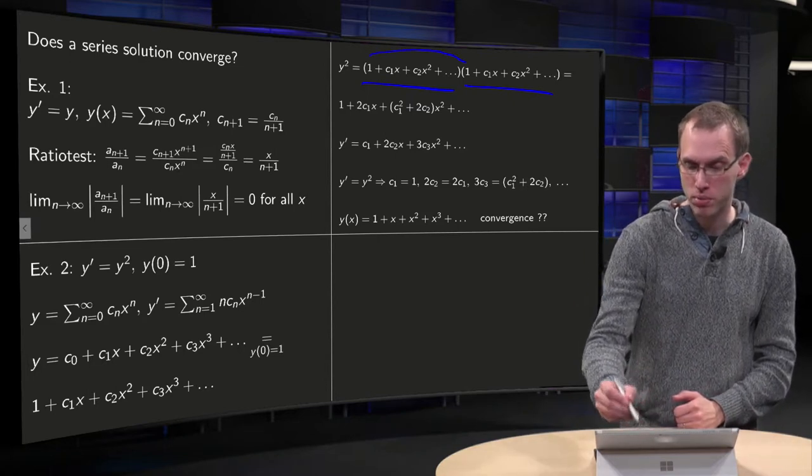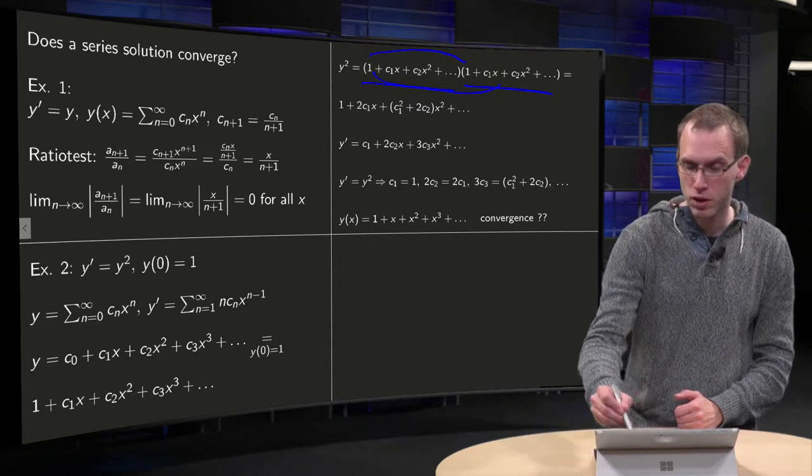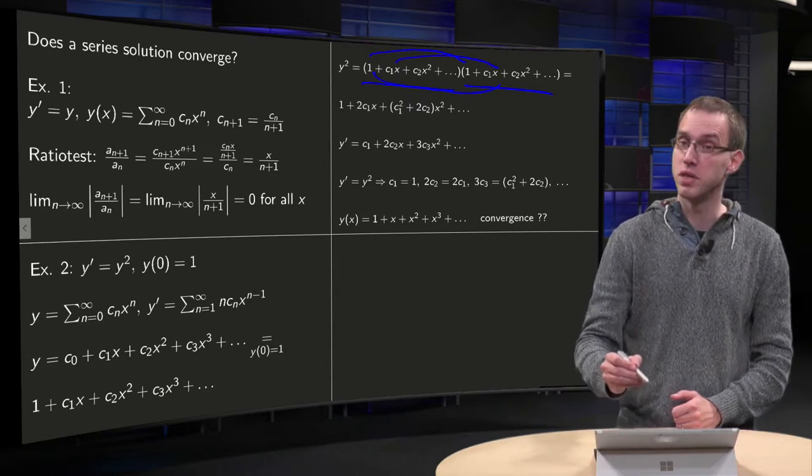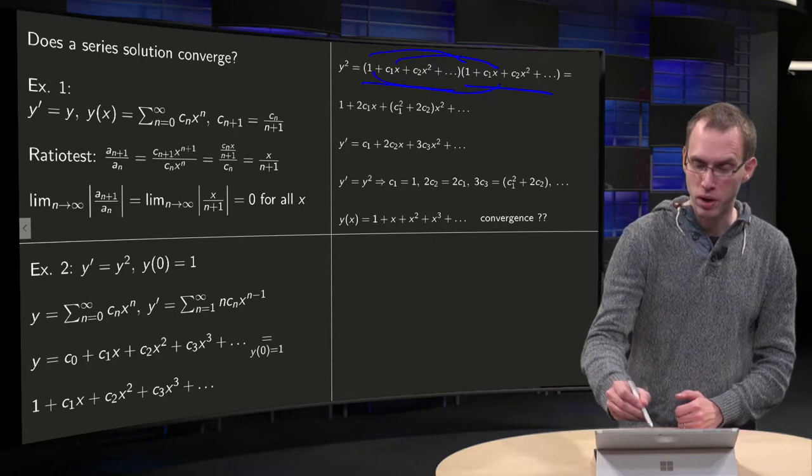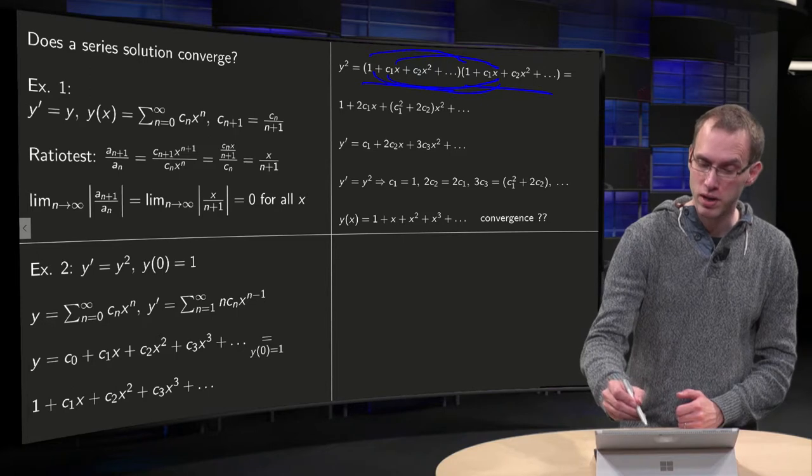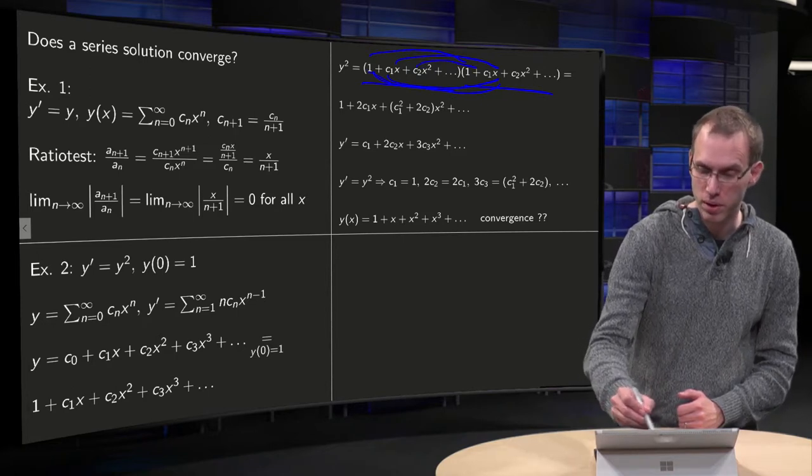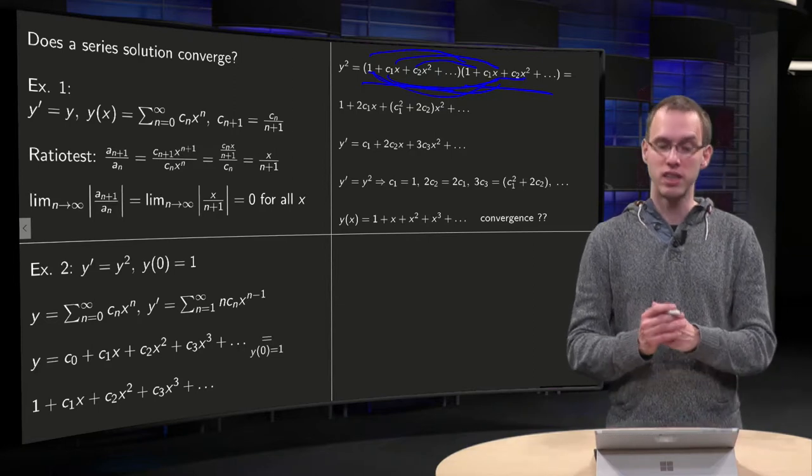For y squared we get 1 times 1 gives a 1, what do we get with an x, c1 times x plus c1 times x. What do we get with x squared? Well, c1 times c1 times x squared, but we also get c2 times x squared times 1 and c2 times x squared, etc.